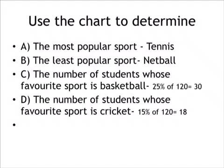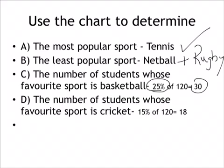Well now that we've worked out all the answers, all we need to go back is to our original questions. The most popular sport was tennis, the least popular sport was netball and rugby. The number of students whose favorite sport is basketball, remember 25% of 120 was 30, and the number of students whose favorite sport is cricket, 15% of 120, so that in actual fact is 18 students. I hope you certainly benefited from this lesson where we had a look at the percentage of students and converting the percentage into an actual number.